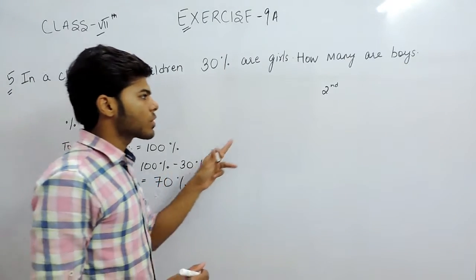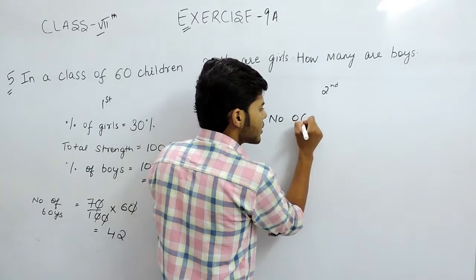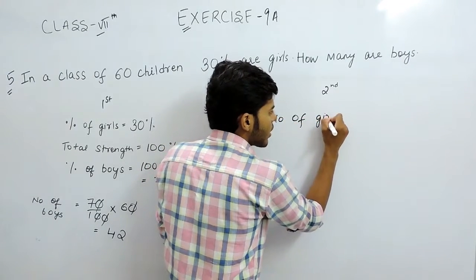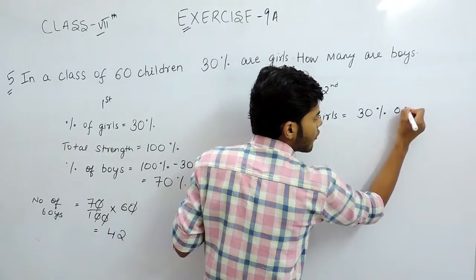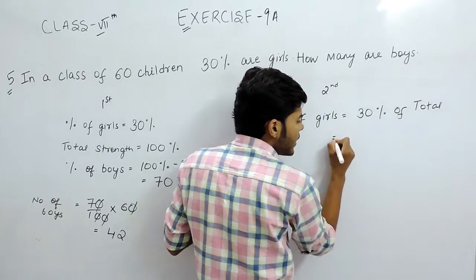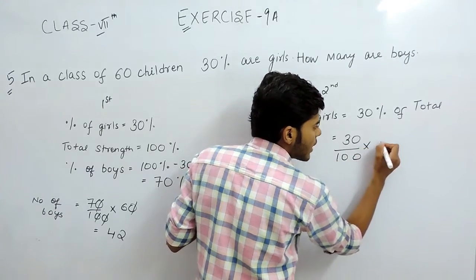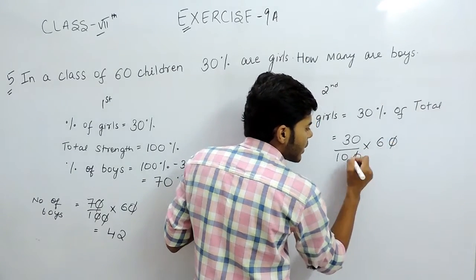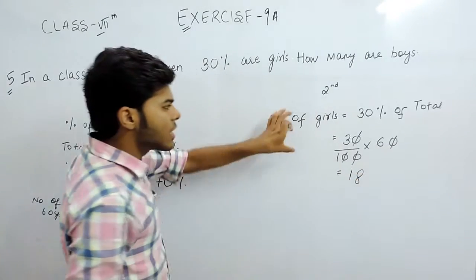This is the first method. The second method: number of girls will be equal to 30% of the total. That will be 30 divided by 100, multiplied by the total, which is 60. We will cancel these zeros out, and that will be 18. So the number of girls is 18.